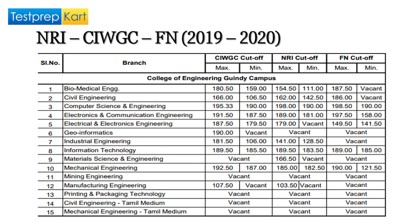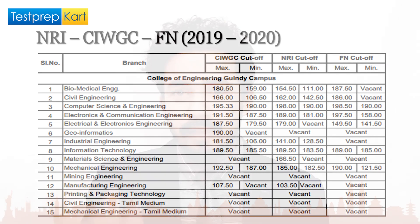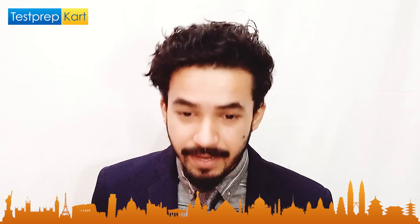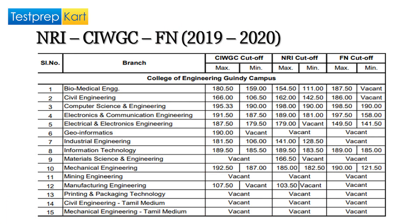For NRI students in Biomedical Engineering, the maximum cutoff was 144 and the minimum was 111. For Foreign Nationals in Biomedical, the cutoff was 187, with the minimum listed as vacant because some reserved seats go unfilled when eligible students don't apply. For Civil Engineering, the CIWGC maximum was 166 and minimum was 106. For NRI students in Civil, it was 162 maximum and 142 minimum. For Foreign Nationals in Civil, the maximum was 186 with the minimum again vacant.